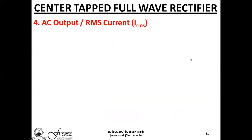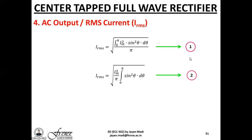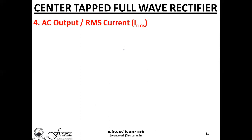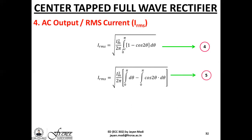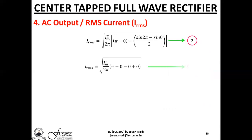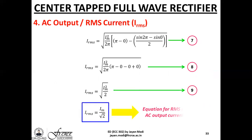Exactly similarly, the RMS output current follows the same set of equations with Im replacing Vm. The result is IRMS = Im/√2. That is the equation for the RMS or AC output current.